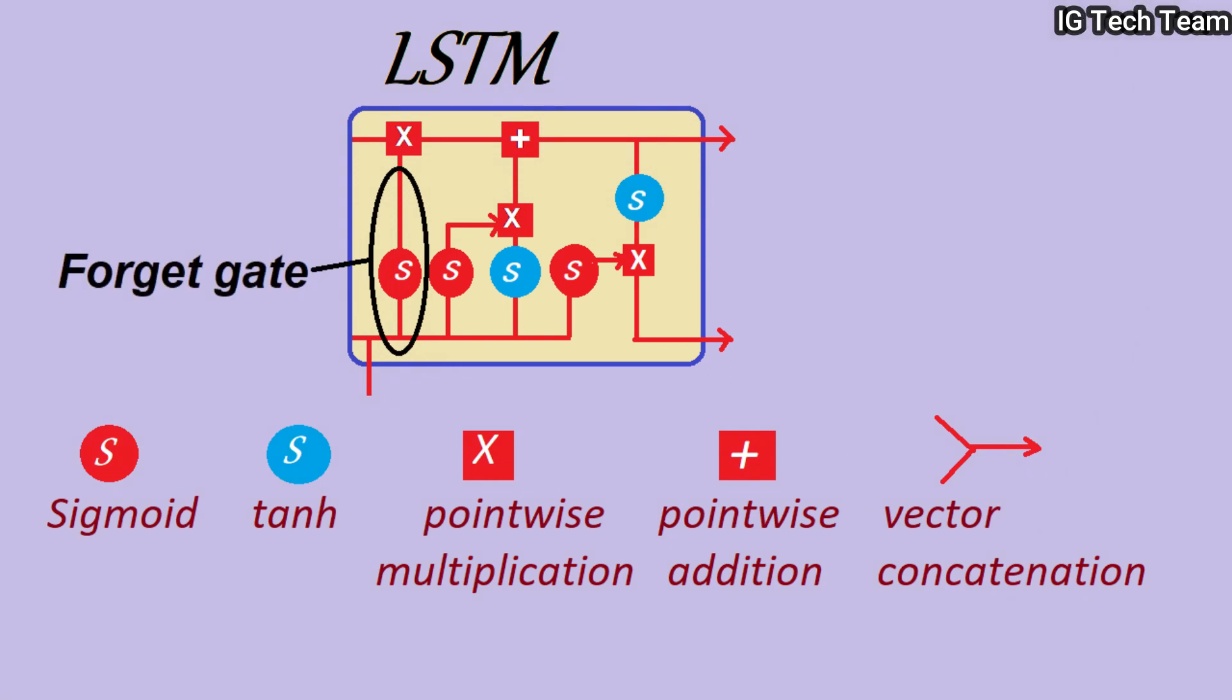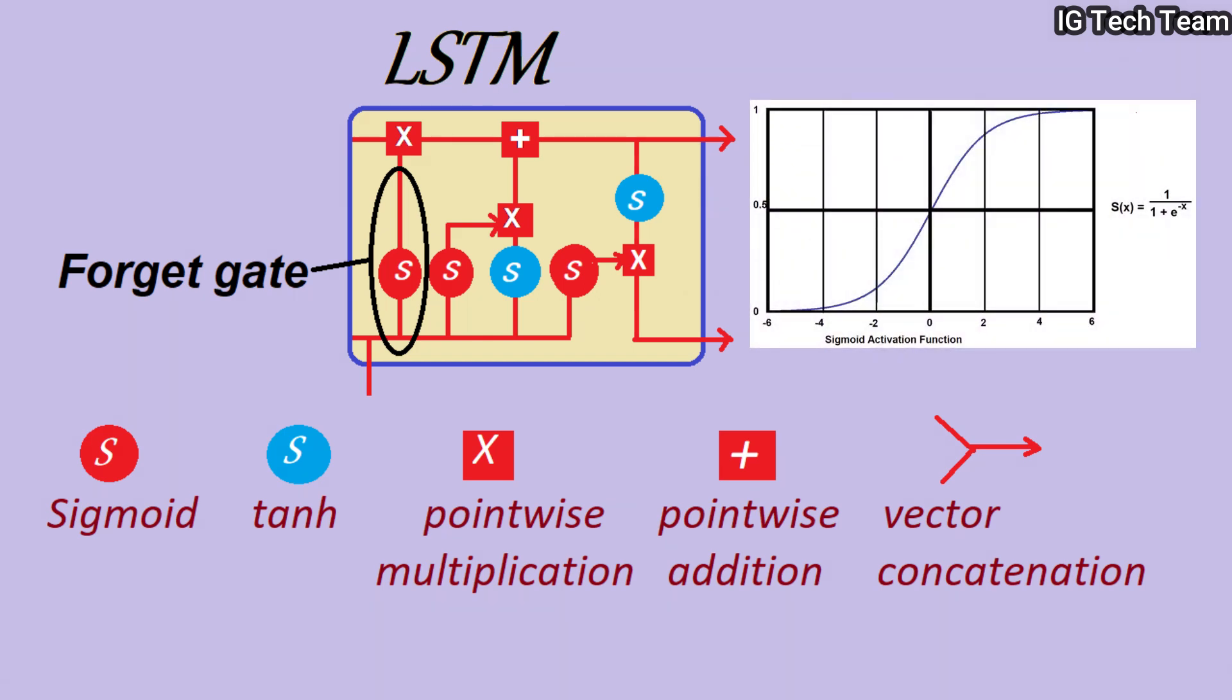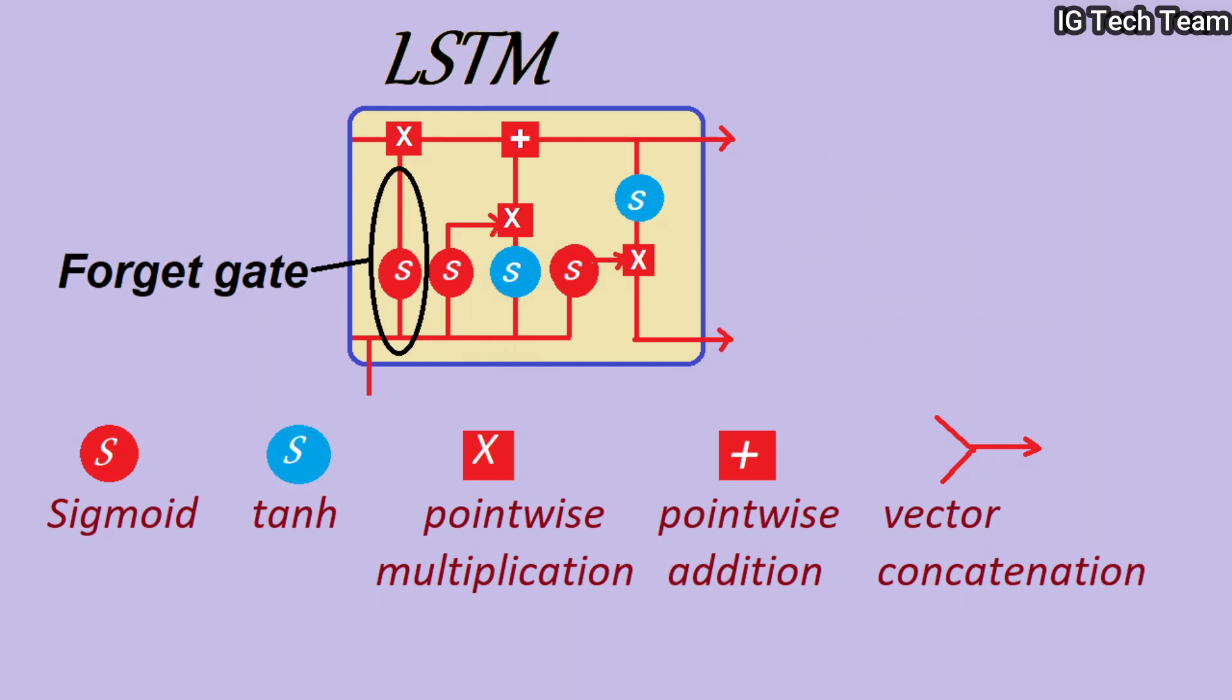You can see the forget gate clearly in this architecture. In this forget gate, each information passes through a sigmoid function. Do you know about the sigmoid function? It returns value from 0 to 1. If it returns a value near to 0, this means the information is not that much important, whereas if it returns a value near to 1, this means the information is important. So we can forget the information if the value comes near to 0, and we have to keep the information if the value comes near to 1.